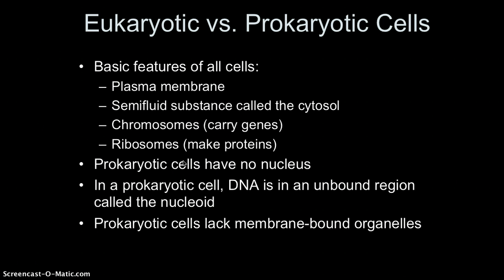Looking at the basic features shared by all cells — both prokaryotic and eukaryotic — all cells have a plasma membrane, a semi-fluid substance called the cytosol in which cell structures are suspended, chromosomes that carry genes (genetic information as DNA), and ribosomes needed to make proteins. The biggest difference is that prokaryotic cells have no nuclei; instead, their DNA is in an unbound region called the nucleoid. Prokaryotic cells also lack membrane-bound organelles, whereas eukaryotic cells have a nucleus and membrane-bound organelles.